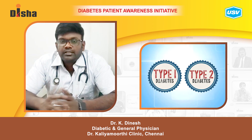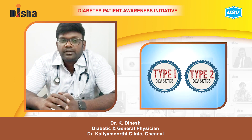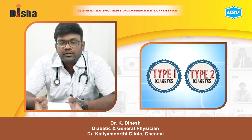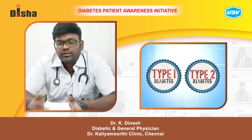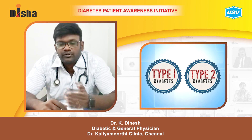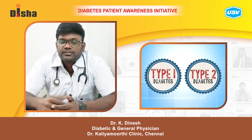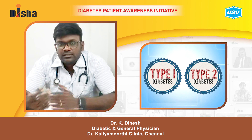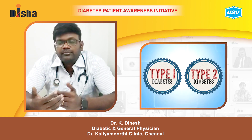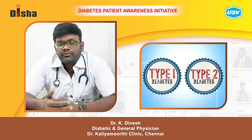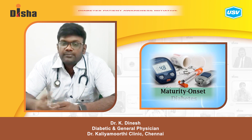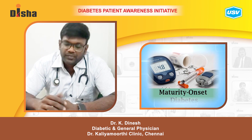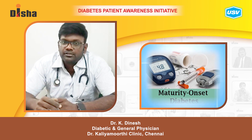Diabetes can be broadly classified into type 1 and type 2. Type 1 occurs in children and type 2 in adults. Apart from type 1 and type 2, there are also other types of diabetes such as MODY — Maturity Onset Diabetes of the Young.